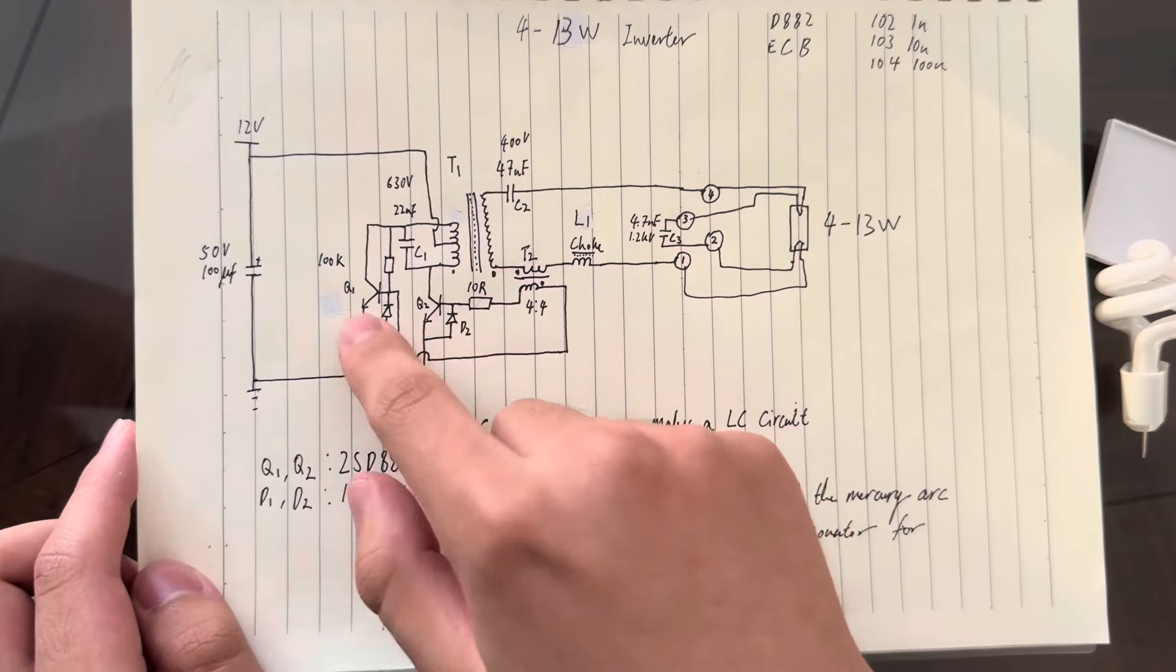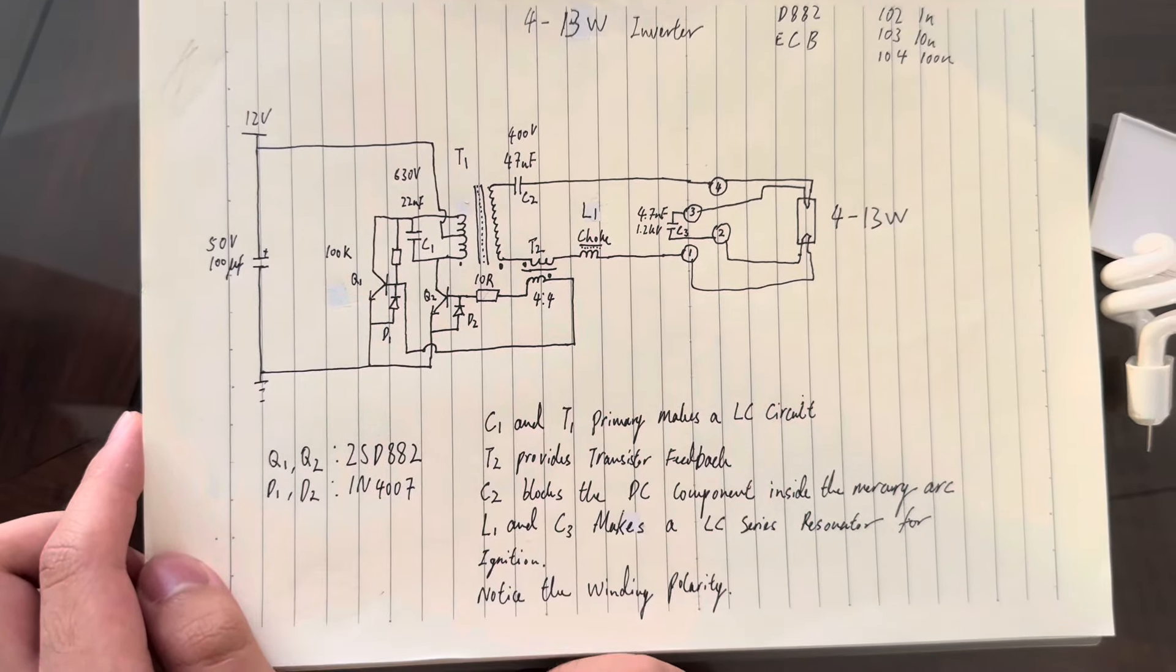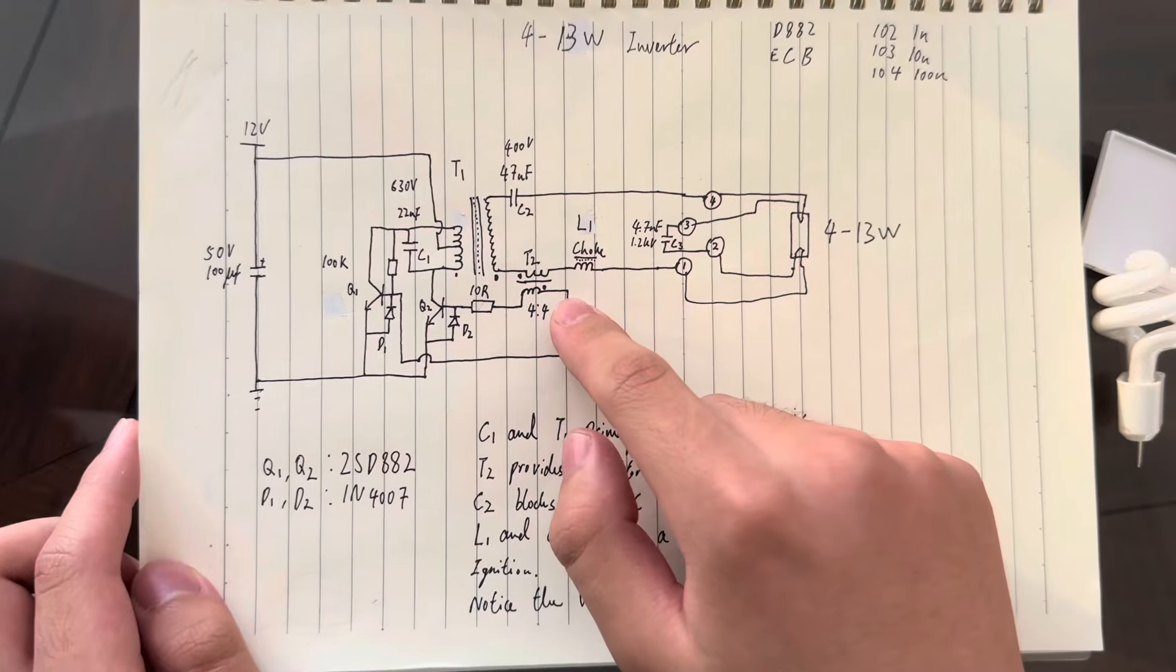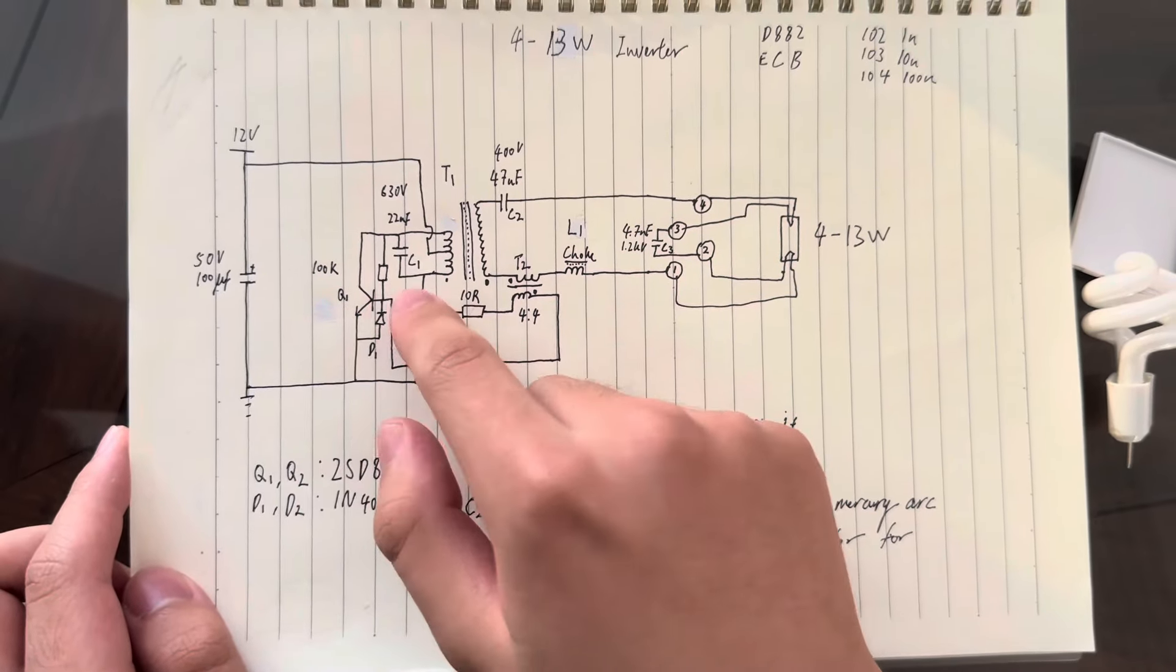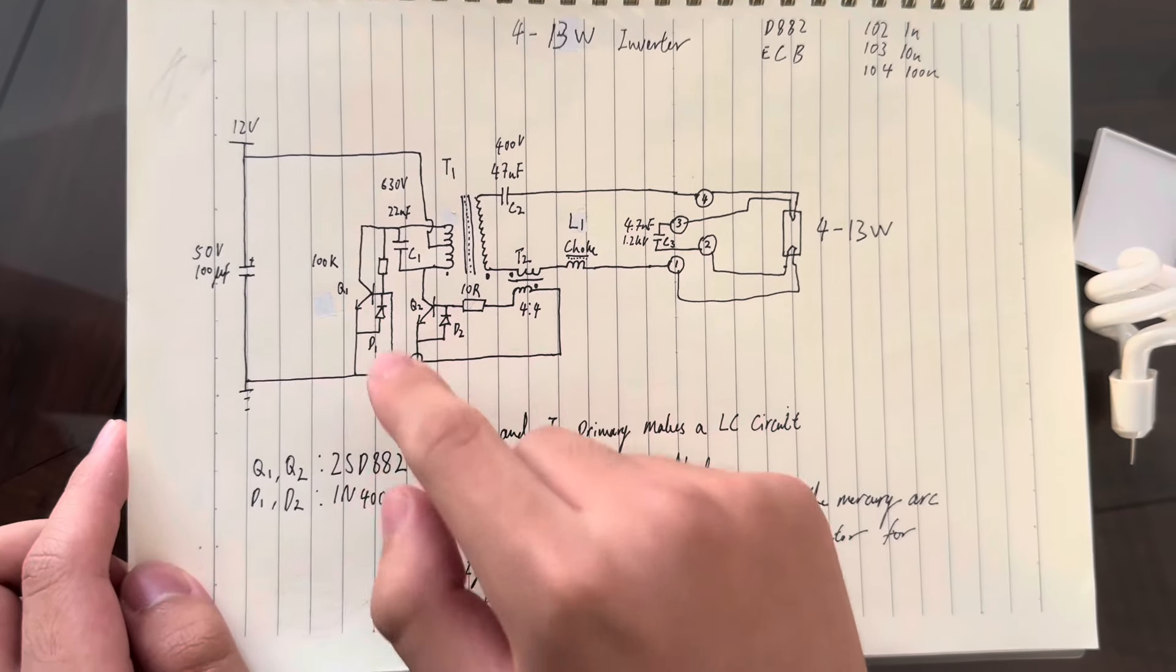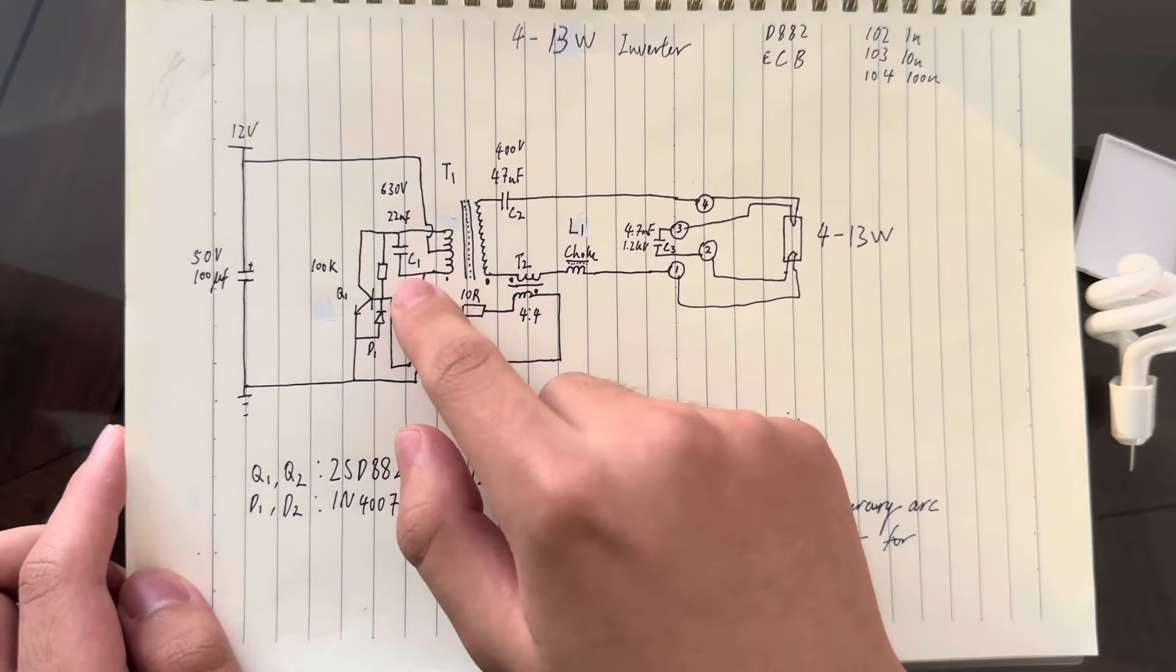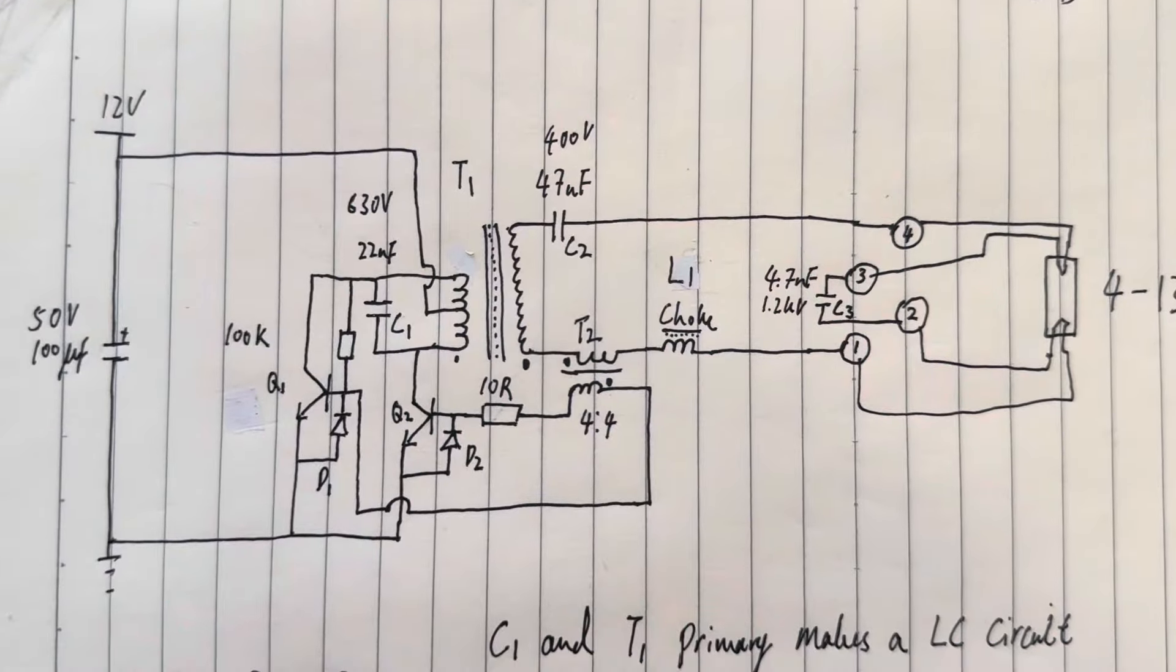So the timing of the two transistors is incredibly important in order to prevent any cross-conduction, as well as the correct amount of base drive. Here we can see a 100k resistor being provided to the base of the first transistor here, which is NPN as well. So this provided is for a kickstart for the entire oscillation of the circuitry.